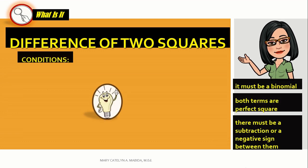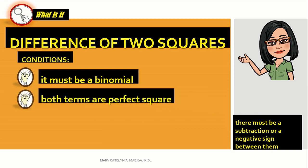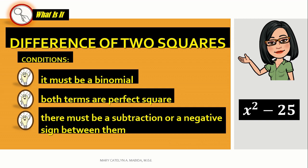There are conditions to be followed. Condition number one: it must be a binomial, meaning there are two terms. Condition two: both terms must be perfect squares, meaning you could take the square root and they would come out evenly. And condition number three: there must be a subtraction or negative sign in between them. Take for example, x squared minus 25. Is it a binomial? Yes, there are two terms. Are both terms perfect squares? Yes — the square root of x squared is x and the square root of 25 is 5. And is there a subtraction sign? Yes, there is.